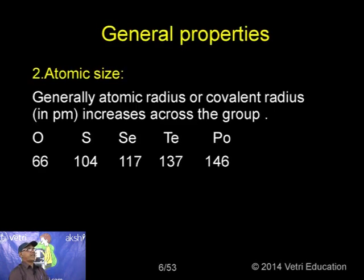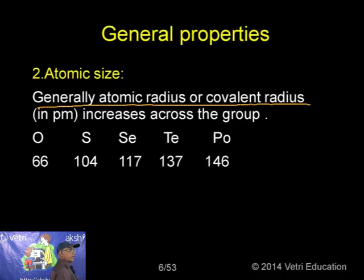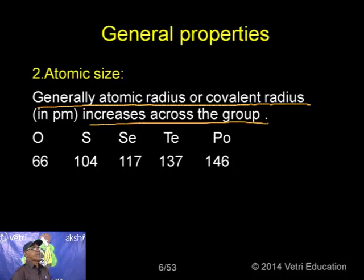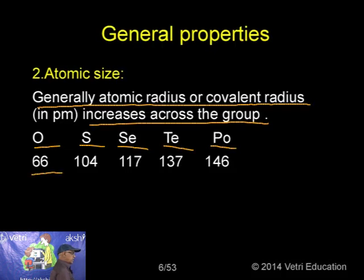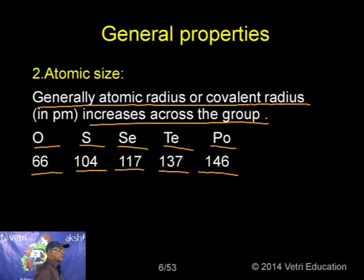For atomic size, the covalent radius in picometres increases down the group. Oxygen is 66 pm, Sulphur 104, Selenium 117, Tellurium 137, and Polonium 146. So atomic radius increases down the group, while it decreases across a period — this is the standard periodic trend.